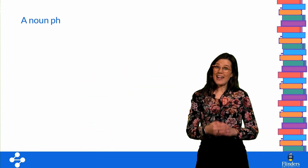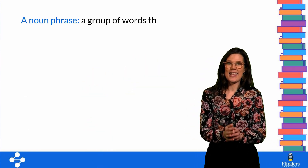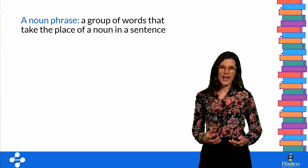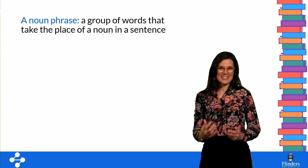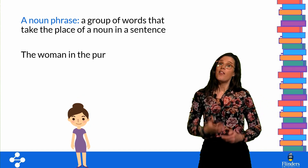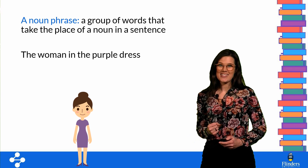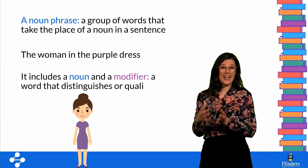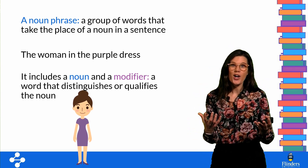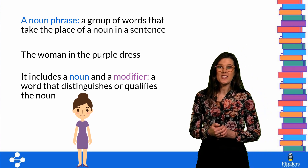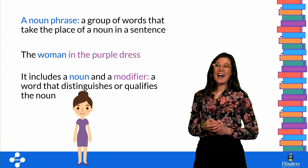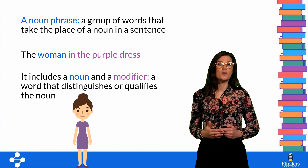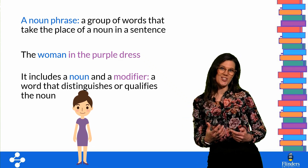A noun phrase then is a whole group of words that takes the place of the noun in the sentence. For example, the woman in the purple dress. So a noun phrase includes the noun itself — the original word. In this case, that's the word woman.